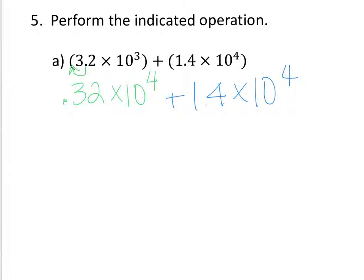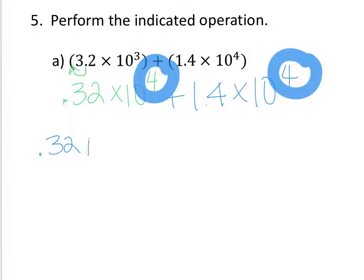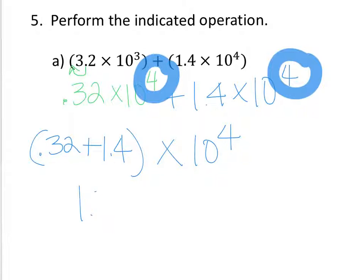So now we have the same exponents, and now we can add these numbers. Once the exponents are the same, we're going to keep them the same. So we're going to add 0.32 plus 1.4, and then we're going to keep that exponent the same. So 0.32 plus 1.4 equals 1.72, and then we have times 10 to the 4th. So this is our final answer.